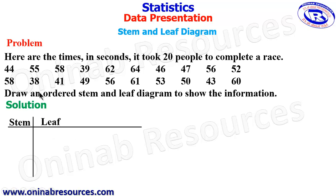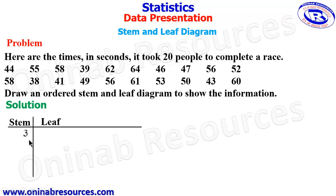Since it is going to be an ordered stem and leaf diagram, we are meant to start from the smallest to the largest. We need to look at the range of values of the numbers. We have 30, 40, 50 and 60. The numbers range from 30 to 60, which means our tens digits will be 3, 4, 5 and 6, recorded on the stem column.